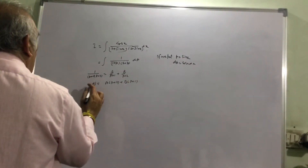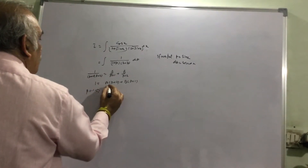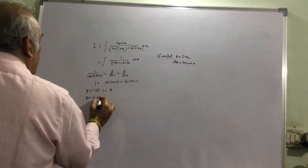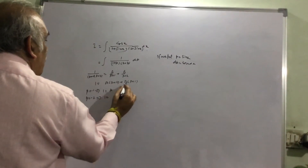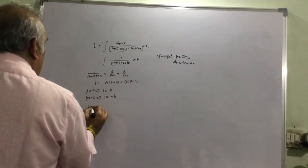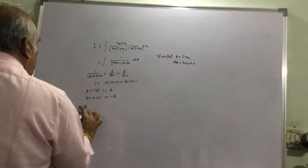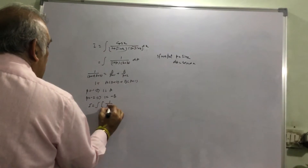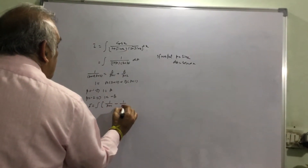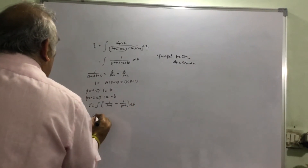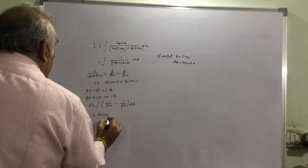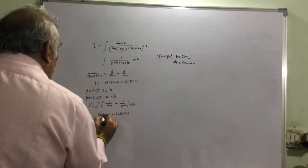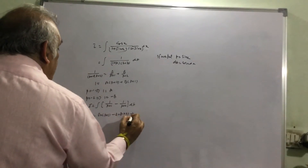Putting p equal to minus 1 gives A equal to 1. Putting p equal to minus 2 gives B equal to minus 1. So we can write the integral as 1 divided by (p plus 1) minus 1 divided by (p plus 2) dp, which gives log|p plus 1| minus log|p plus 2| plus a constant.